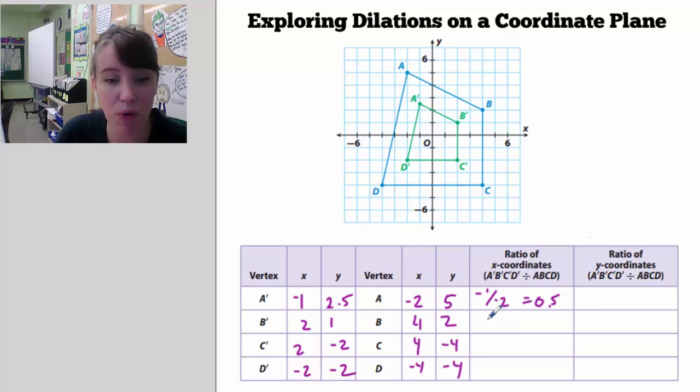Here we have 2 over 4, which is one half. And then here we have 2 over 4, which is again one half. And here we have negative 2 over negative 4, which is one half. With the y coordinates, we have 2.5 over 5, which is one half.